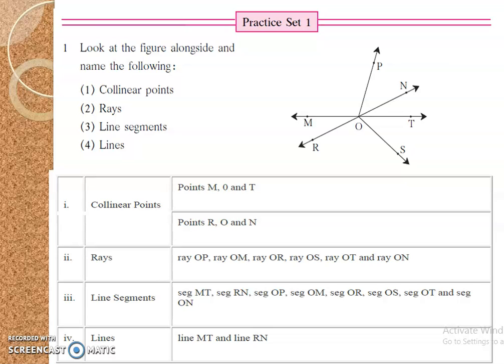Practice set 1: Look at the figure alongside and name the following. First one is name the collinear points. Point M, point O, point T, point R, point O, point N. Rays: RAY OP, RAY OM, RAY OR, RAY OS, RAY OT and RAY ON. Line segment: Segment MT, segment RN, segment OP, segment OM, segment OR, segment OS, segment OT and segment ON. Lines: Line MT and line RN.